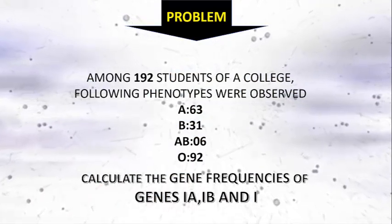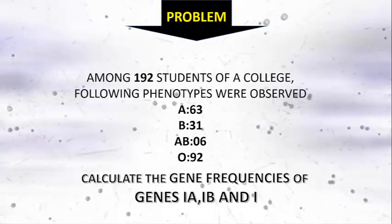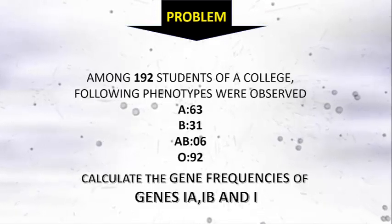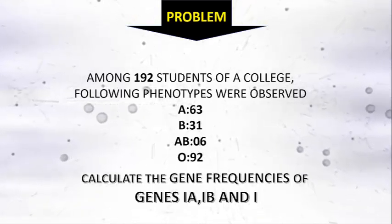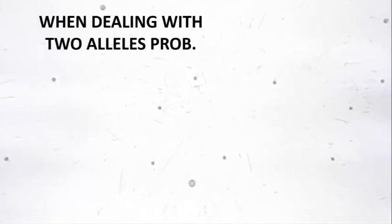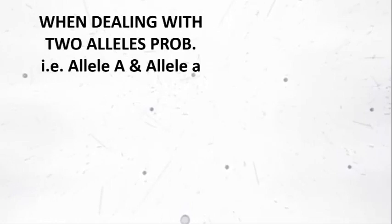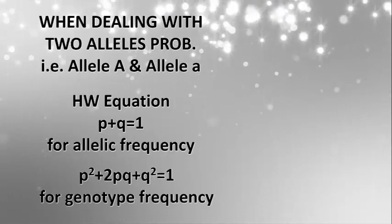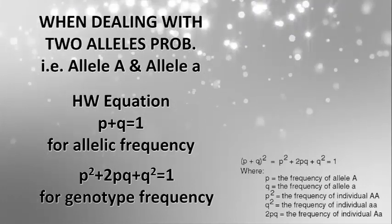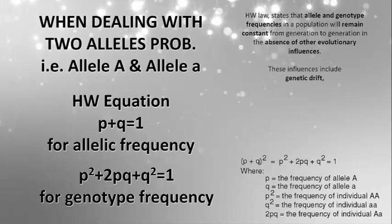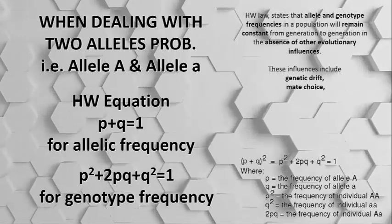This is not the type of problem we usually solve with two alleles — capital A and small a, or capital T and small t. First, let's clear some basics about two-allele problems. When we deal with two alleles, allele capital A and allele small a, we use two equations: p plus q equals 1, and p-squared plus 2pq plus q-squared equals 1.